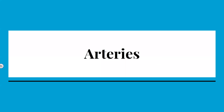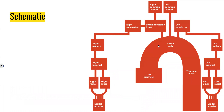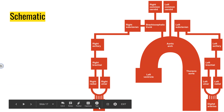Next we'll talk about the course of the arteries. Blood leaves the left ventricle and enters the aortic arch, which has three branches: the brachiocephalic trunk, the left common carotid, and the left subclavian. The brachiocephalic trunk splits into the right common carotid and right subclavian. Once we get to the subclavians on either side, it's basically the same track down to the hands: subclavian into axillary into brachial, which splits into radial and ulnar, which supply the hand and fingers through the digital arteries.